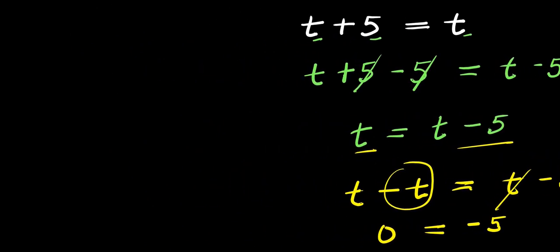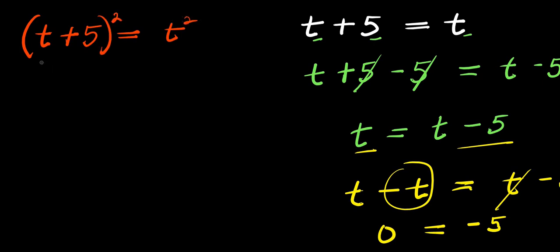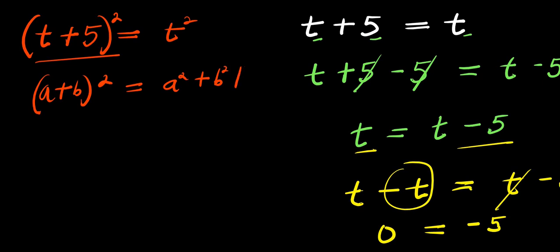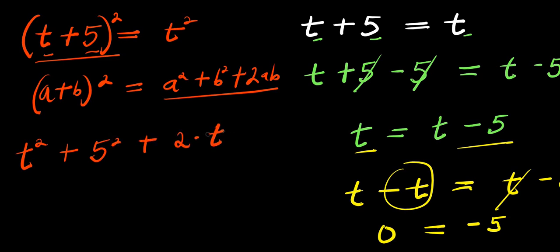Now let's try to take the squares of this equation: t plus 5 equals t. Taking the squares, I raise both sides to the power of 2. I need to expand this using the formula: a plus b raised to the power of 2 equals a squared plus b squared plus 2 times ab. In this equation, our a is t and b is 5, so I have t squared plus 5 squared plus 2 times t times 5, and this equals t squared.